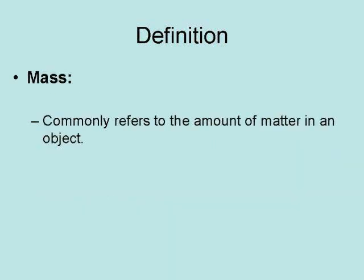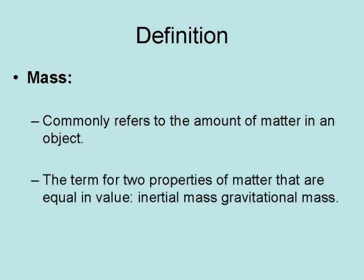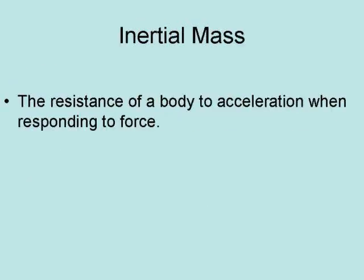Mass commonly refers to the amount of matter in an object. It is the term for two properties of matter that are equal in value: inertial mass and gravitational mass.